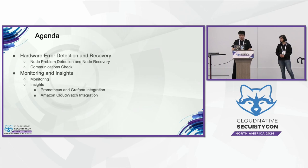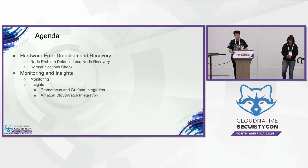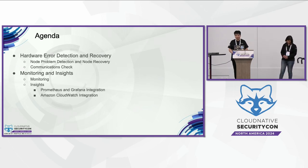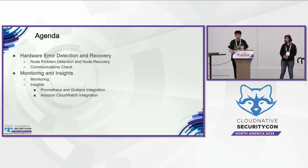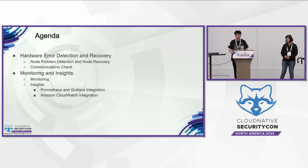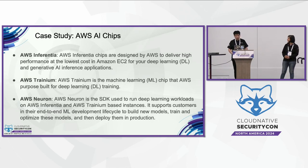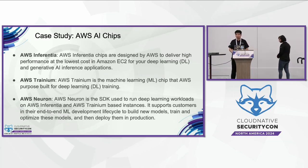So here is today's agenda. For hardware error detection and recovery, we will introduce node problem detection and recovery and communication checks. For monitoring and insights, we will cover monitoring and use Prometheus, Grafana, and Amazon CloudWatch as examples to introduce insights. In the following introduction, we will use AWS AI chips as our case study.